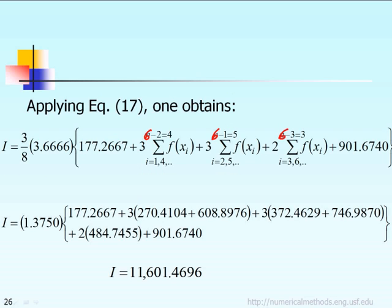If you look at the second term, you can see the subscript i going from 1, 4, 7, and so on up to n minus 2, which is equal to 4 in this case.